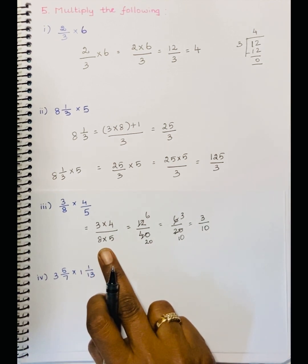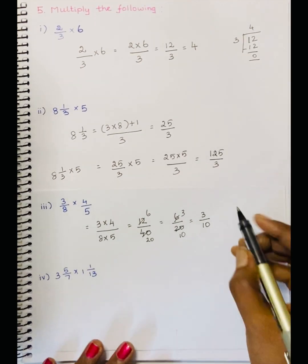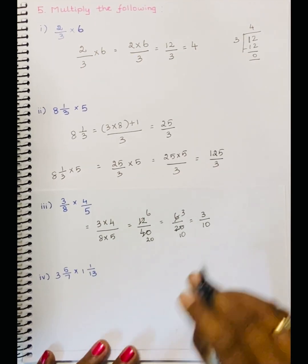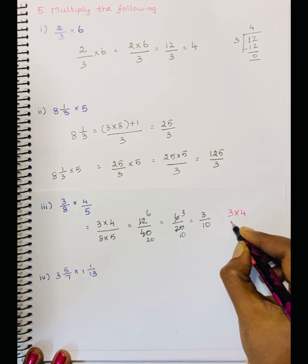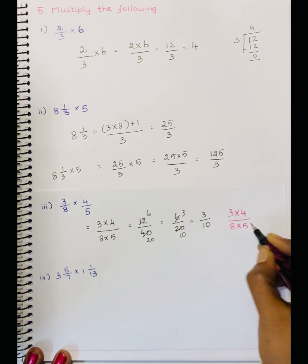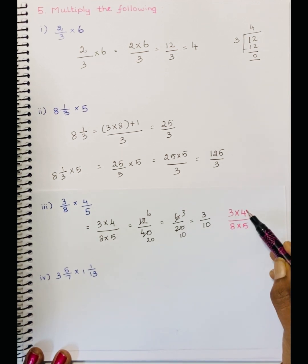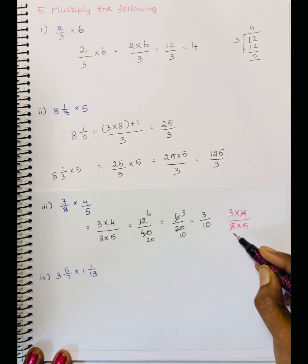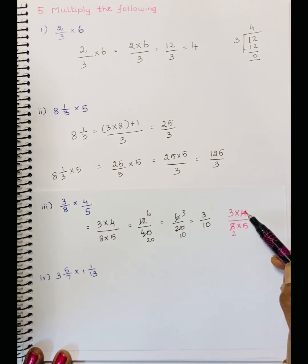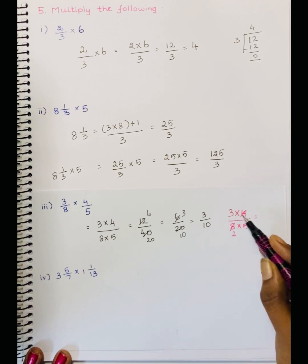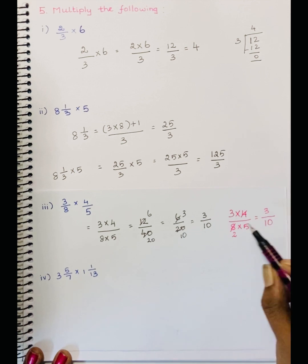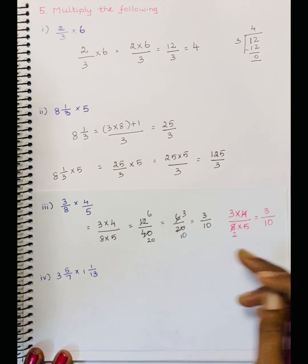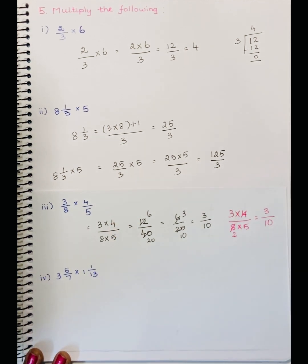You can cancel straight away. In your method, either cancel first: 4 tables — 4 twos are 8. So 3 divided by 2, and 5 twos are 10. So we got the same answer 3 by 10. You can either cancel before multiplying or multiply first then cancel — it's your wish.